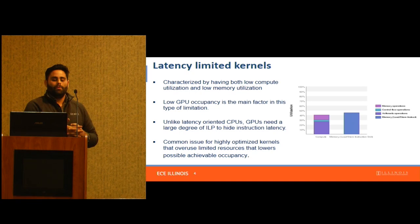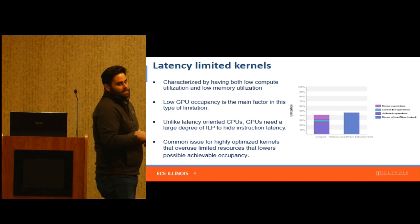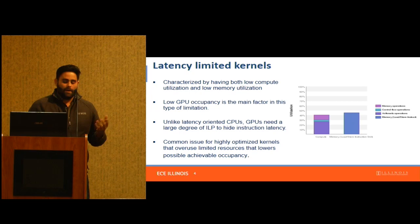The next type of bottleneck is usually found in the most optimized kernels. This is usually characterized when you have both low compute and low utilization in both memory and compute. In the graph shown here from one of the Changa kernels, you have about less than 40% computation and slightly better memory usage, but we are barely using half the GPU.